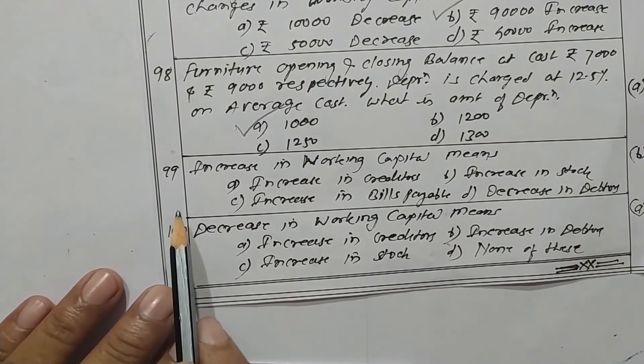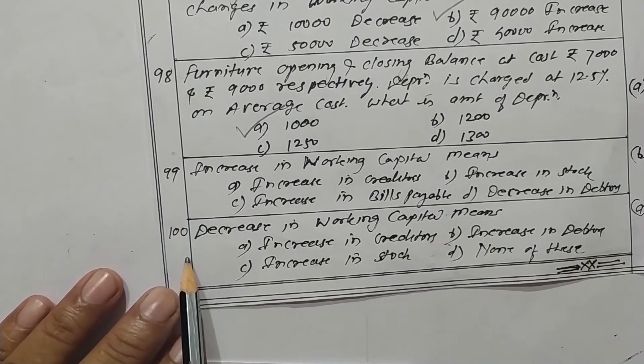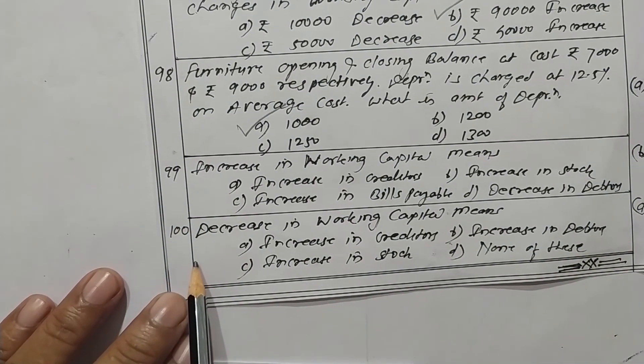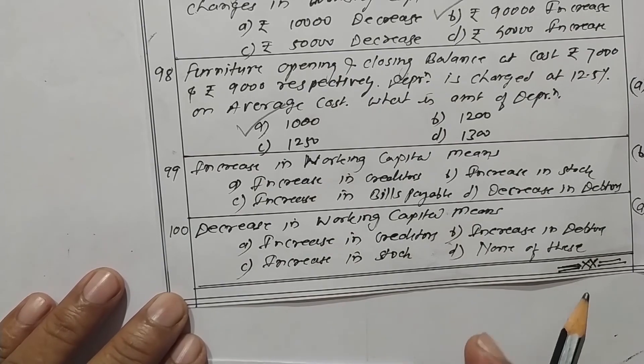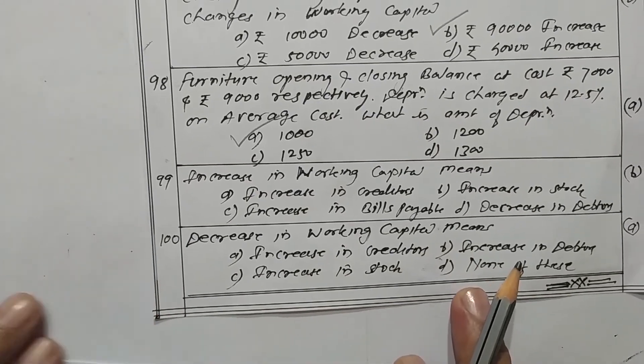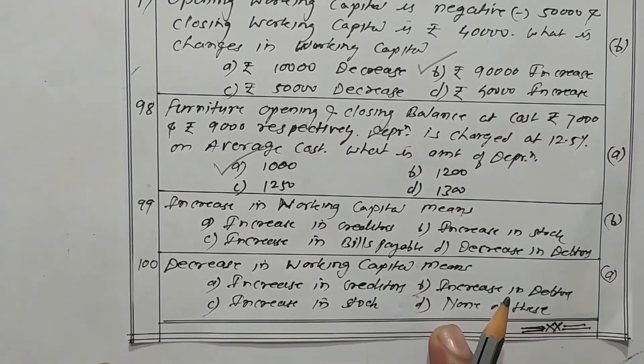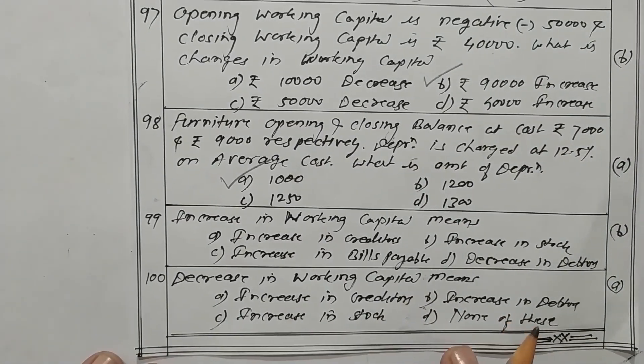Question numbers 99 and 100 are theory questions. This covers questions up to 100 and above.